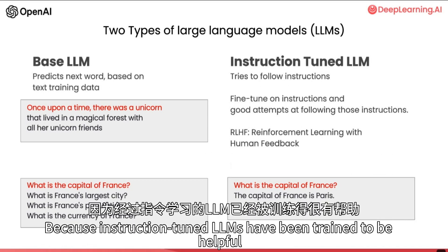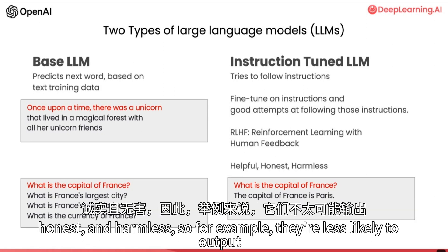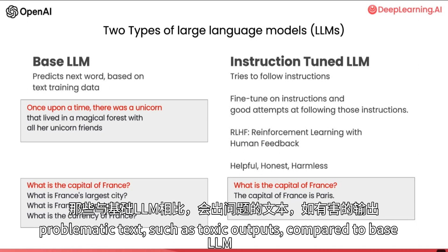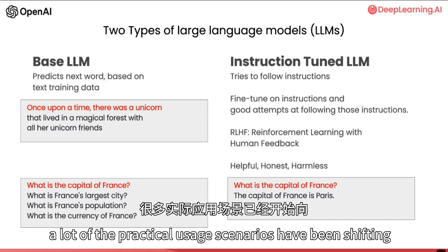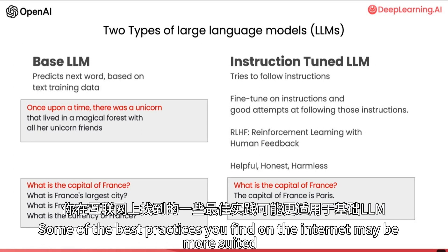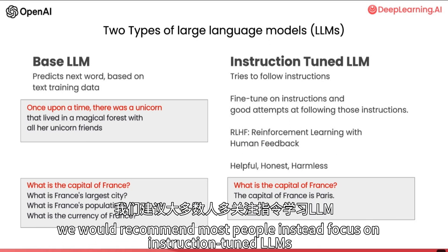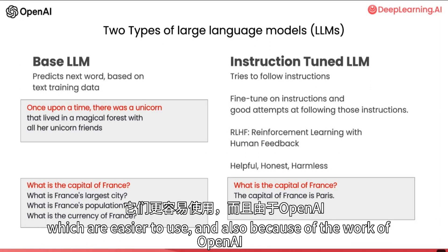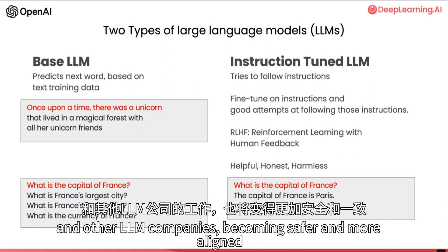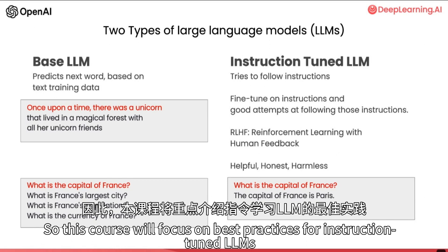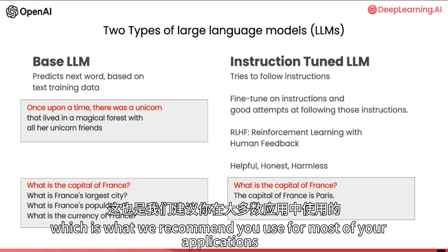Because instruction-tuned LLMs have been trained to be helpful, honest, and harmless, they're less likely to output problematic text such as toxic outputs compared to base LLMs. A lot of practical usage scenarios have been shifting toward instruction-tuned LLMs. Some best practices on the internet may be more suited for base LLMs, but for most practical applications today, we recommend most people focus on instruction-tuned LLMs, which are easier to use and, because of the work of OpenAI and other LLM companies, becoming safer and more aligned. This course will focus on best practices for instruction-tuned LLMs.